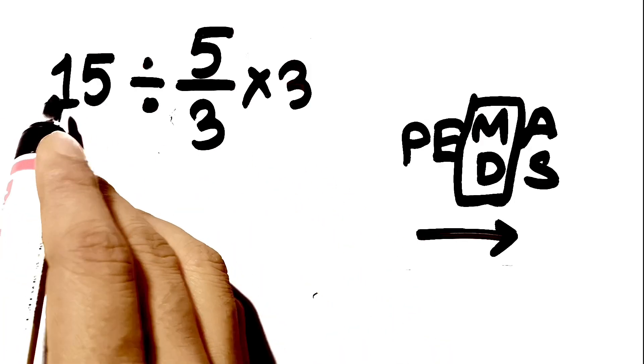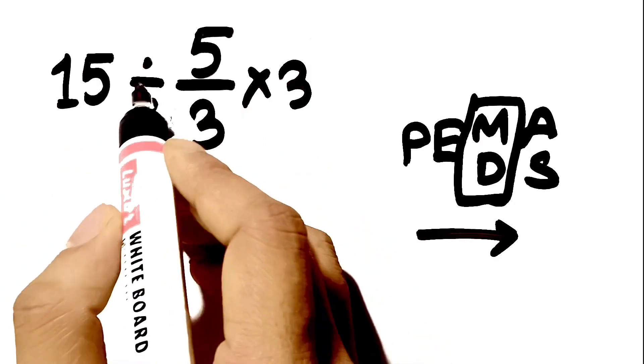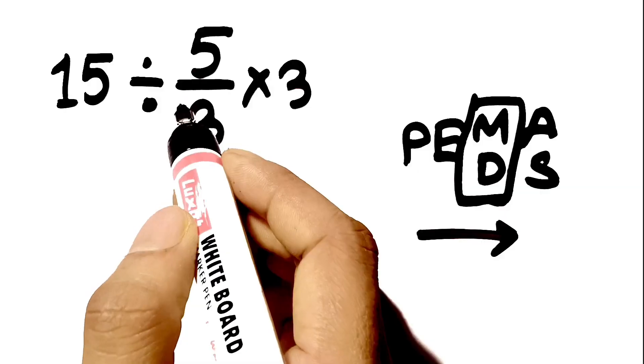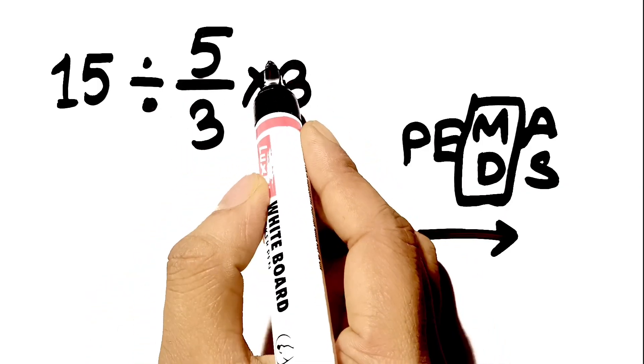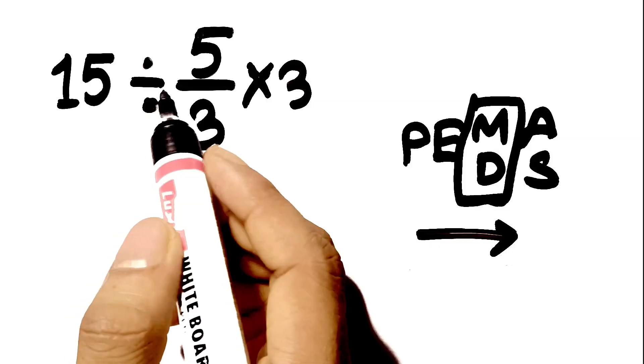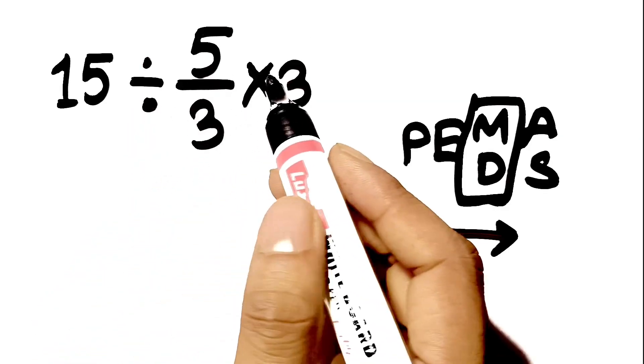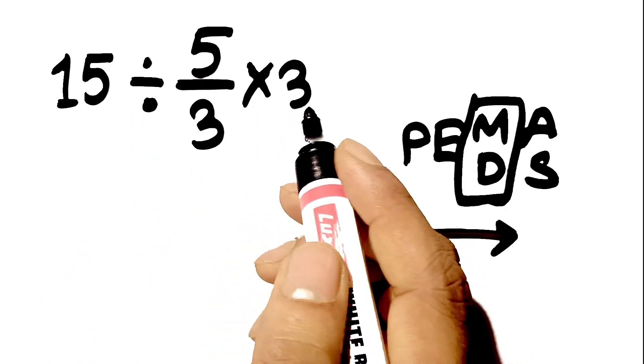In this expression, we have one division sign, which is the 15 divided by 5 thirds, and one multiplication sign. The expression is 15 divided by the fraction 5 thirds, and then multiplied by 3.